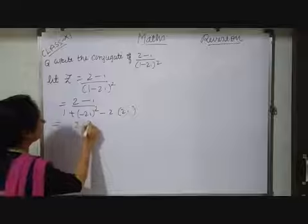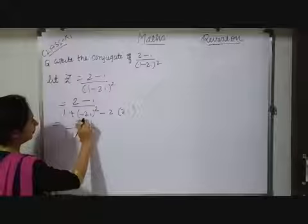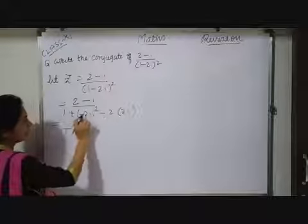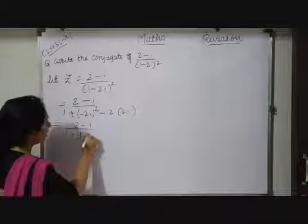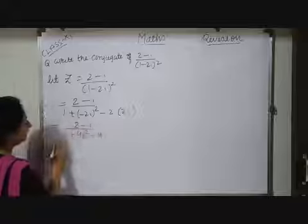So, here I have 2 minus i upon 1. See, power is even. So, minus will be positive. So, plus 4i square minus 4i.